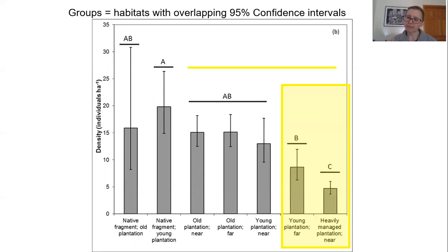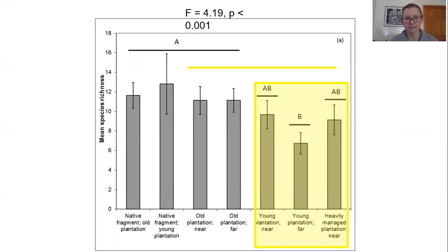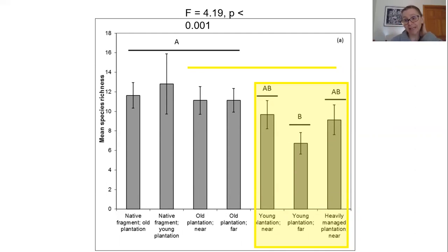When we looked at bird densities, we found that young plantation and heavily managed plantation had significantly lower bird densities than any other kind of habitat, and that native forest fragments and small plantation had the highest densities. When we look at species richness, however, the story is a little different — young plantation again had lower species richness values.